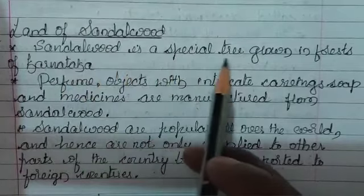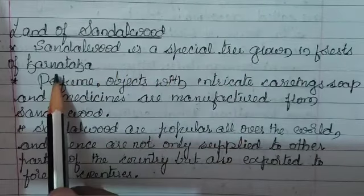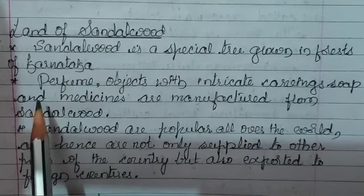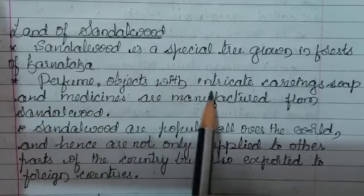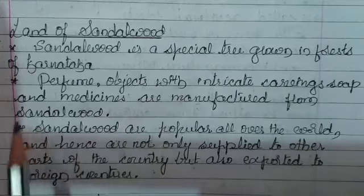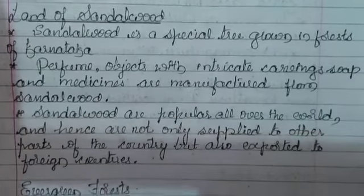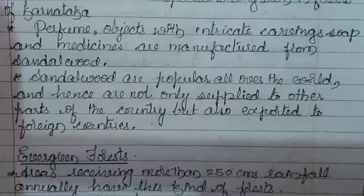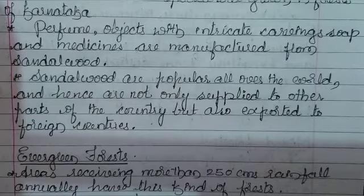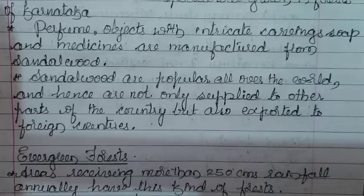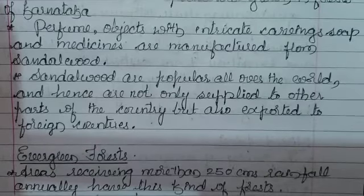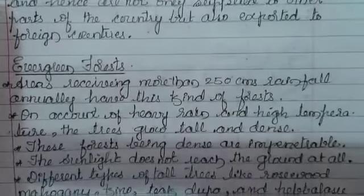Sandalwood is a special tree grown in the forests of Karnataka. Perfume, objects with intricate carvings, soap and medicines are manufactured from sandalwood. Sandalwood is popular all over the world and is not only supplied to other parts of the country but also exported to foreign countries. That is the reason Karnataka is called the land of sandalwood.